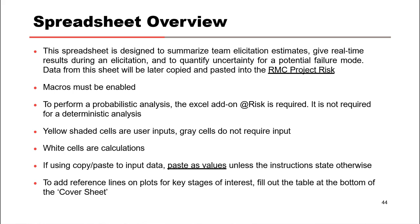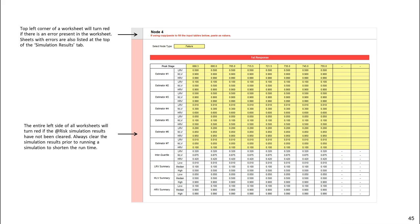Whenever you are copying and pasting input data, always paste as values because many of the cells are conditionally formatted. Also, to add reference lines on plots for key stages of interest, there is a table at the bottom of the cover sheet tab that you can fill out. For each worksheet, the top left corner will turn red if there is an error present in the worksheet. Sheets with errors will also be listed at the top of the simulation results tab. Also, the entire left side of all worksheets will turn red if the spreadsheet is populated with at-risk simulation results. Always clear the simulation results prior to running a new simulation to shorten the runtime, because it will take at-risk a very long time to start a simulation if you do not.